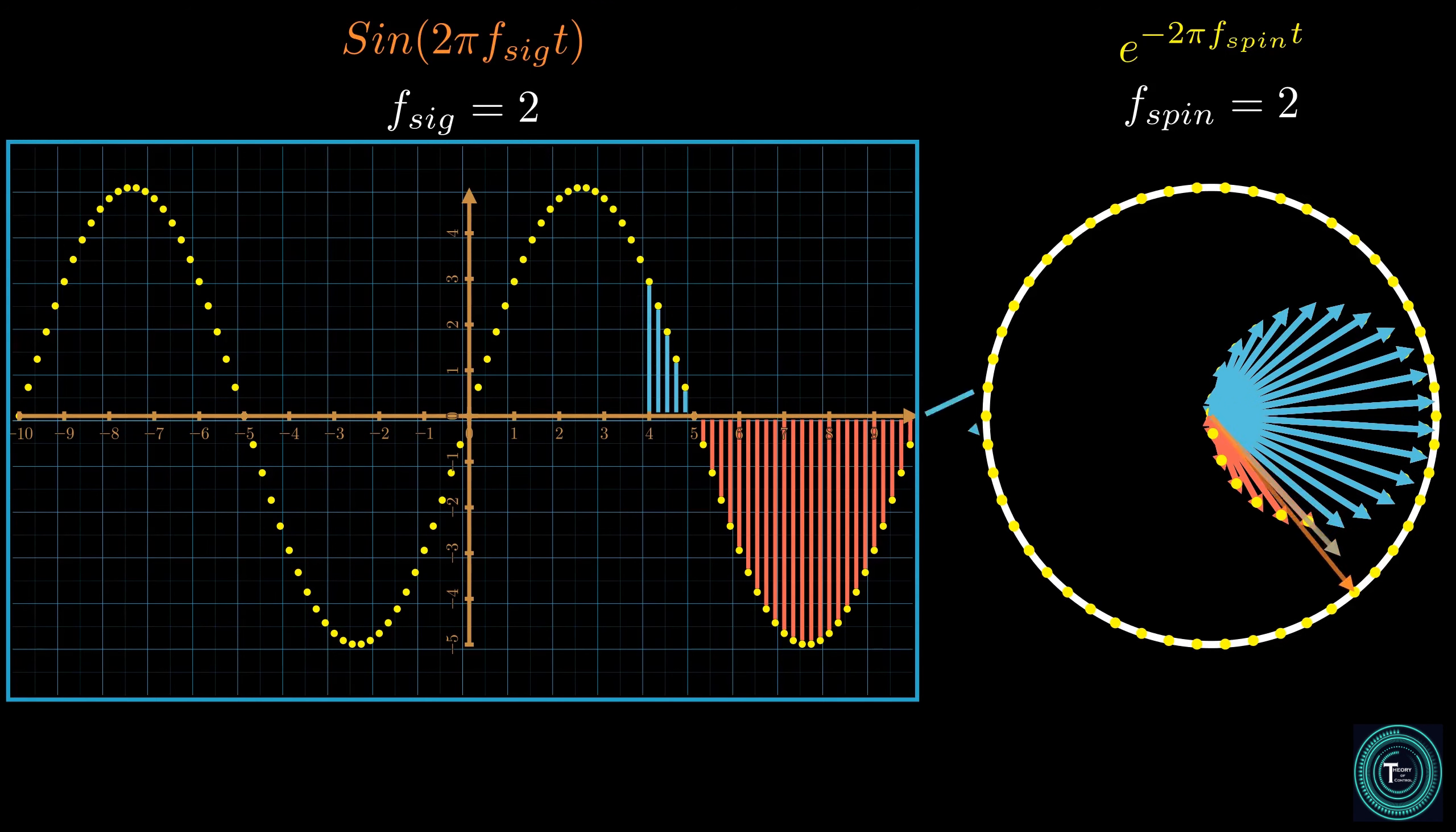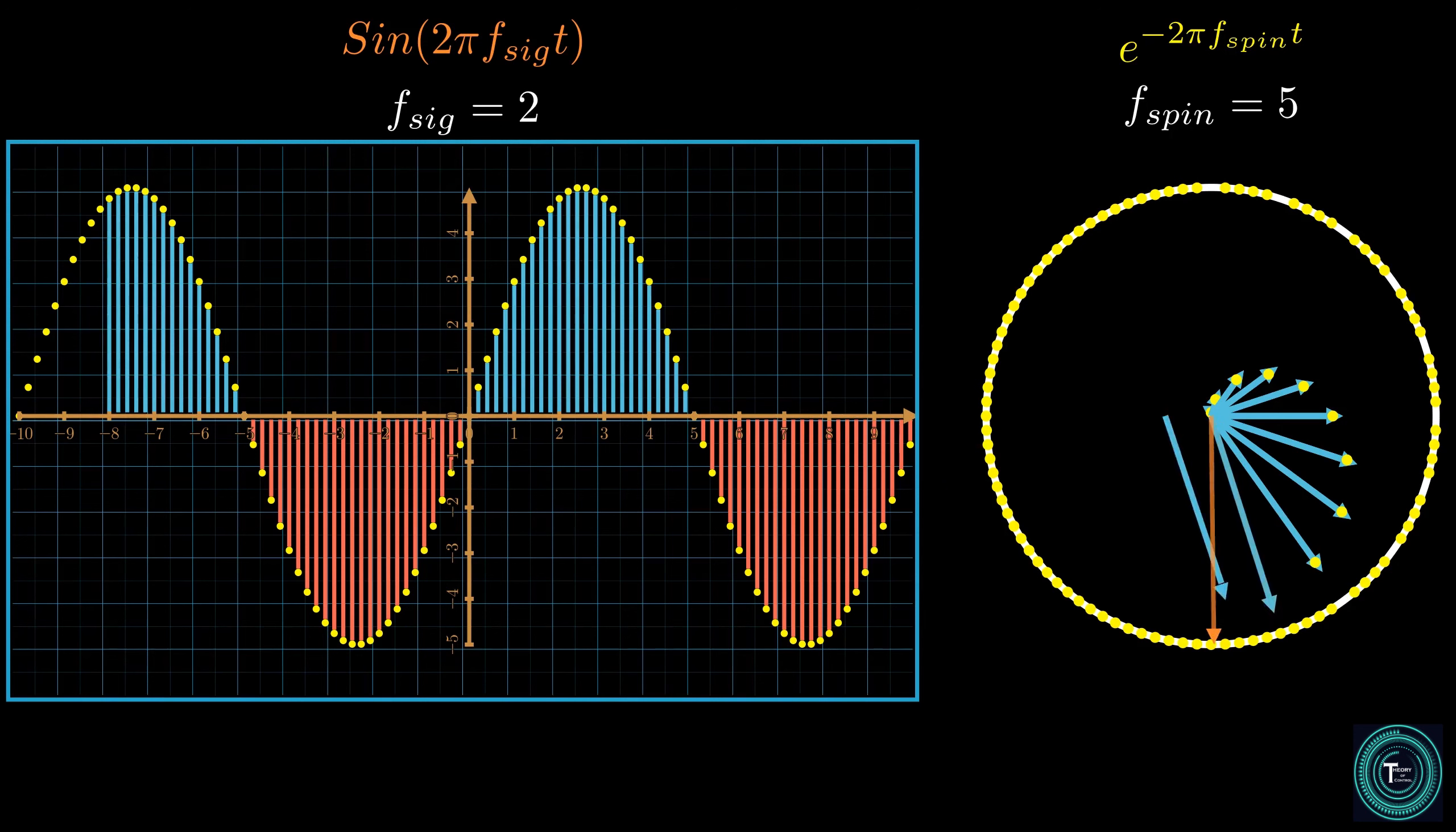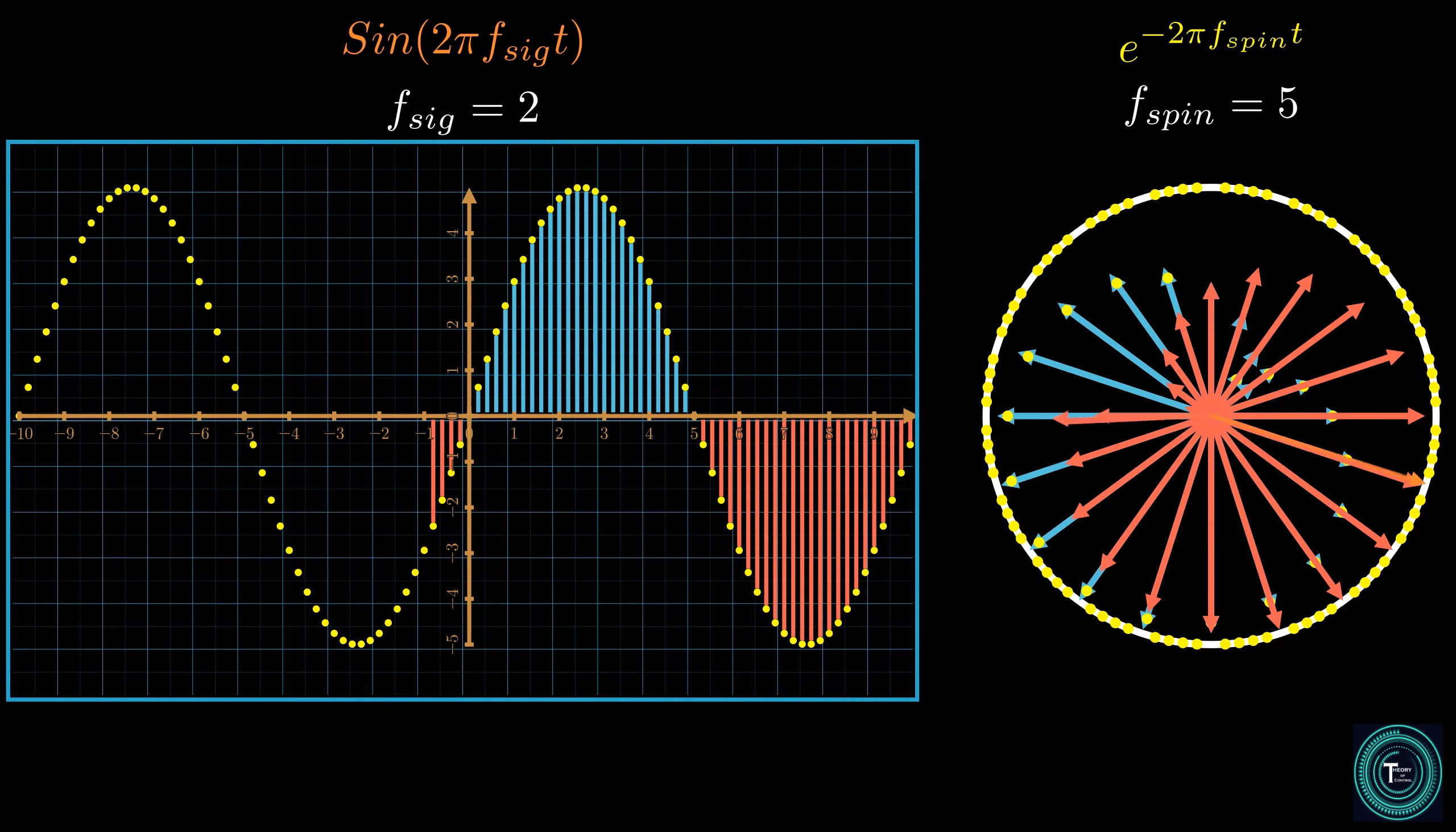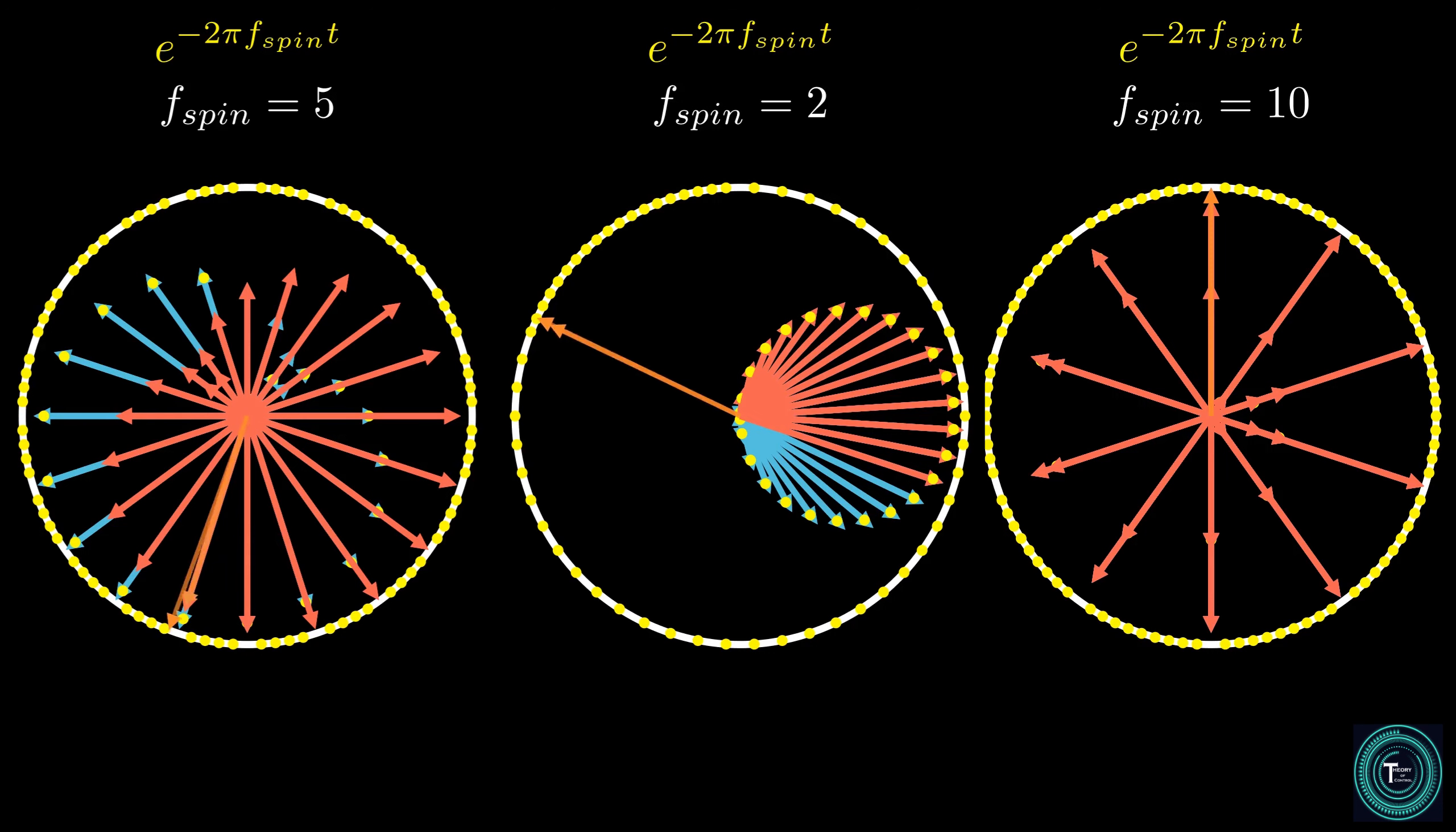When all the samples complete its scaling destiny, the resultant vector shape takes one of two forms, either dense and centered on the center of the origin. When the spin frequency and the signal frequency are a match, the vectors move their center of mass away from the origin. Otherwise, when the two frequencies are different, the center of mass remains at the origin of the circle.